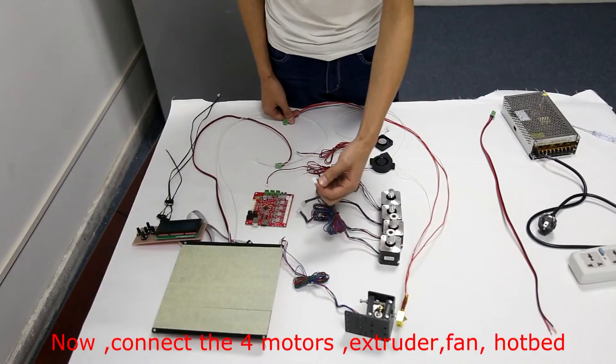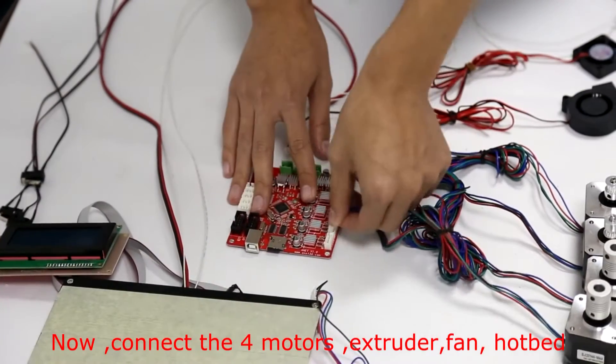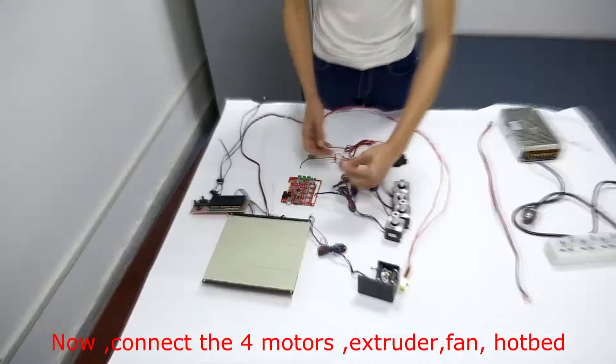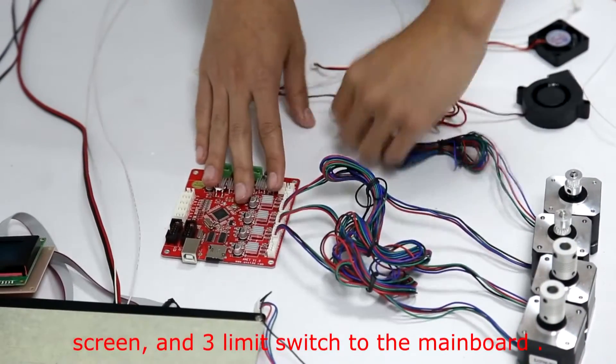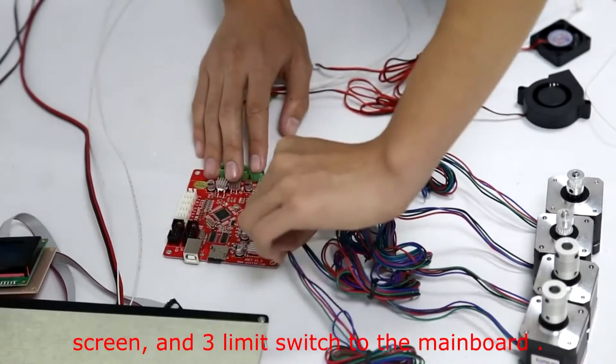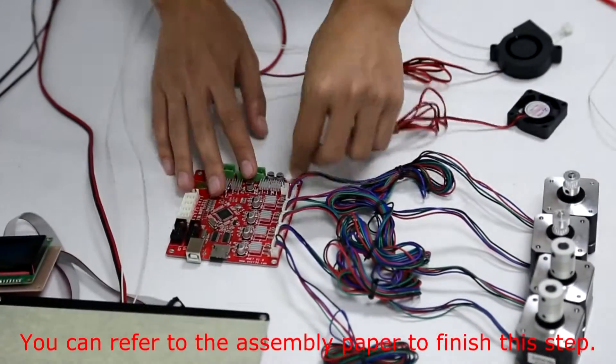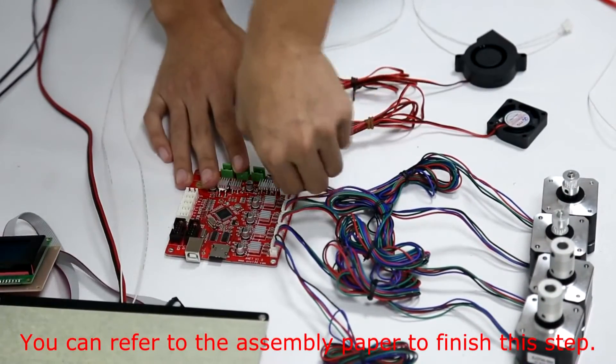Now, connect four motors, extruder, fan, hotbed, screen, and three limit switches to the mainboard. You can refer to the assembly paper to finish this step.